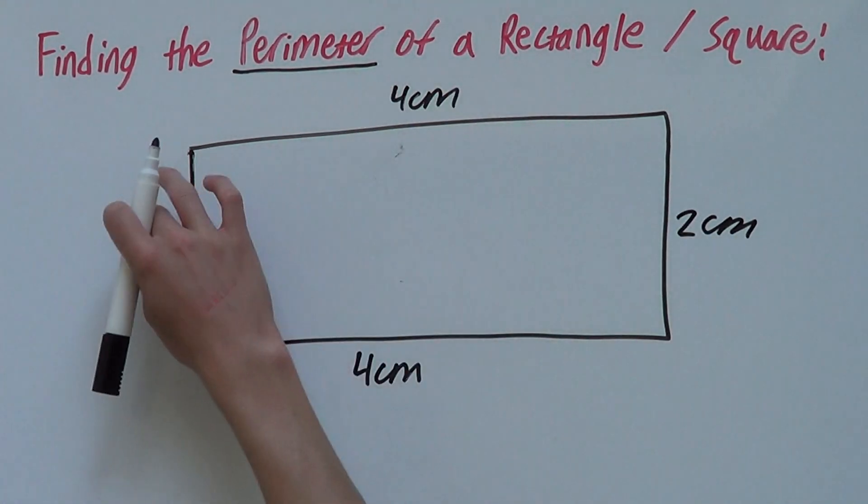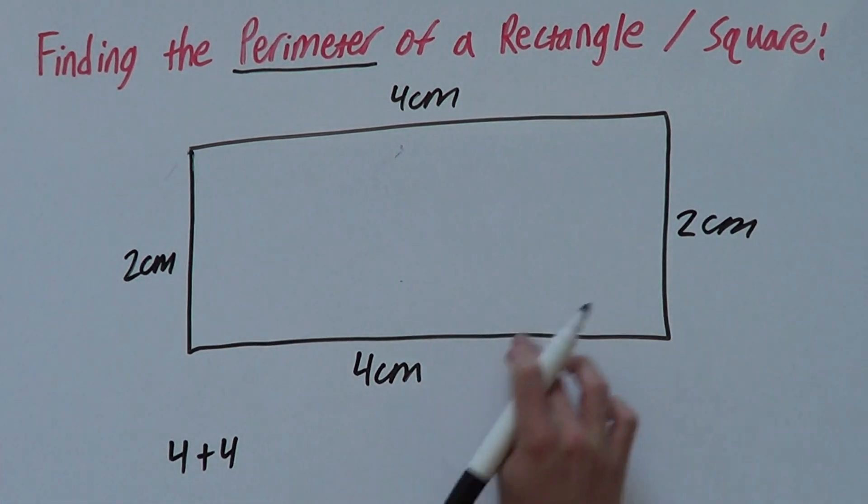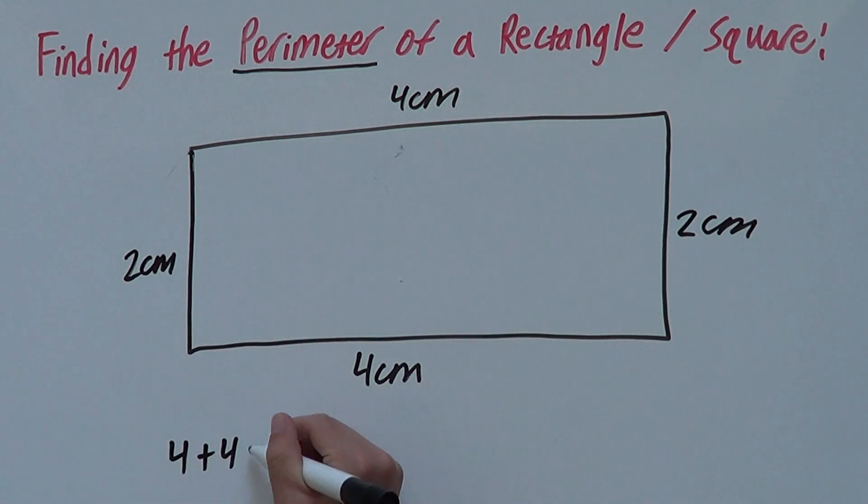So now we have all of our sides, and we can find the perimeter of this rectangle by adding them up. So we have 4 plus 4, so we have our 4s, and we have 2 2s, so we then do 2 plus 2.